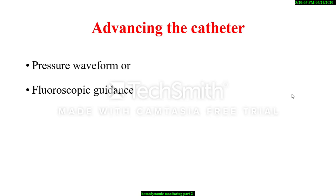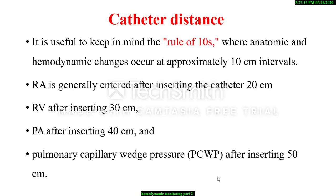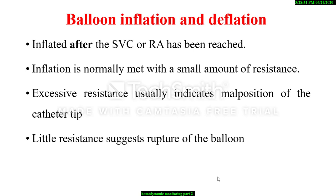Pulmonary artery catheters are positioned using either pressure waveform or fluoroscopic guidance. Pressure waveform guidance is the more common approach. In fluoroscopic guidance, the catheter is visualized by fluoroscopy as it is advanced and balloon inflation is not necessary until the catheter reaches the pulmonary artery. Sometimes transesophageal echocardiography can be used. While advancing the catheter, it is useful to keep in mind the rule of 10, where anatomic and hemodynamic changes occur at approximately 10 cm intervals. For example, when the insertion site is the internal jugular or subclavian vein, the right atrium is generally entered after inserting the catheter 20 cm, the right ventricle after 30 cm, the pulmonary artery after 40 cm, and the pulmonary capillary wedge pressure after 50 cm. The balloon should only be inflated after the SVC or RA has been reached.